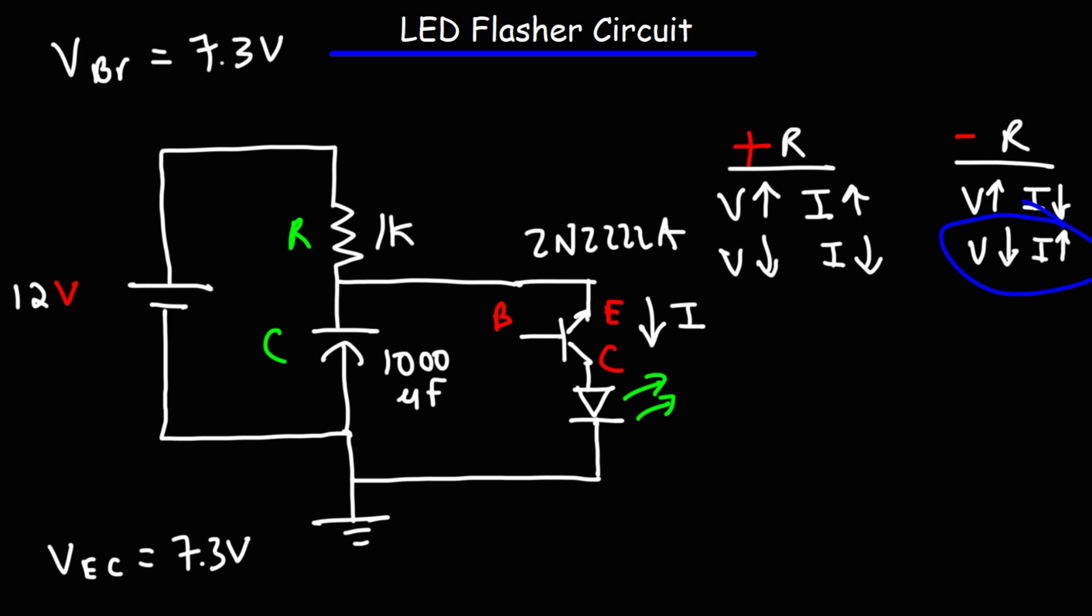Now, for those of you who want to understand how that works, just check out my other video on negative resistance. And I explain how the current increases when the voltage decreases beyond this point. The voltage initially goes up to 7.3, and then it drops to 6.98. As it drops from 7.3 to 6.98, that's when the current flowing through the emitter and the collector of the transistor goes up. And that's when we're operating in the negative resistance region.